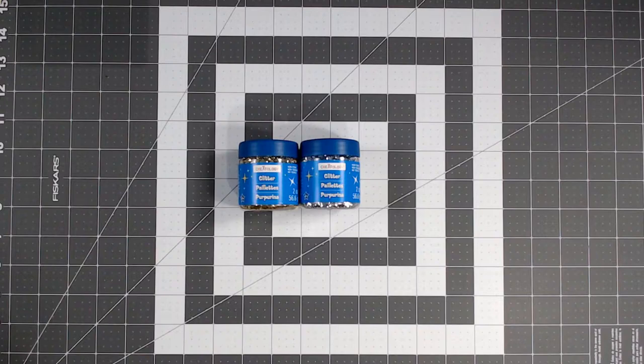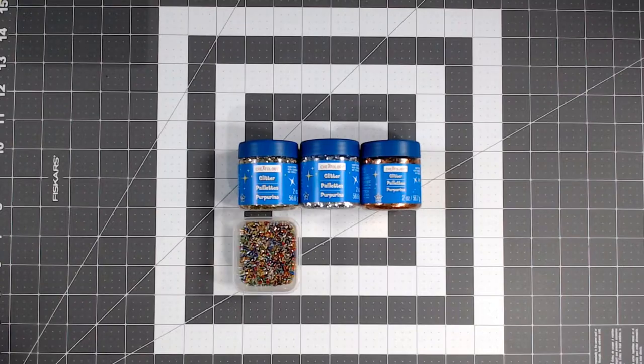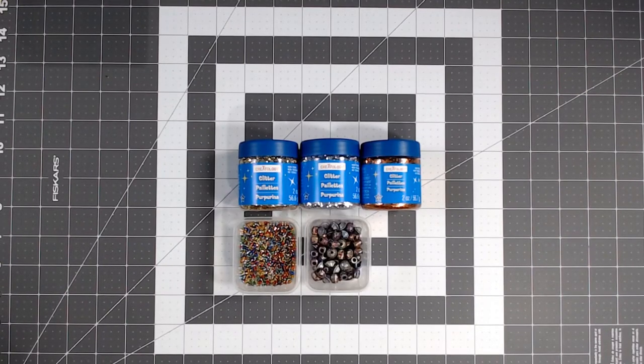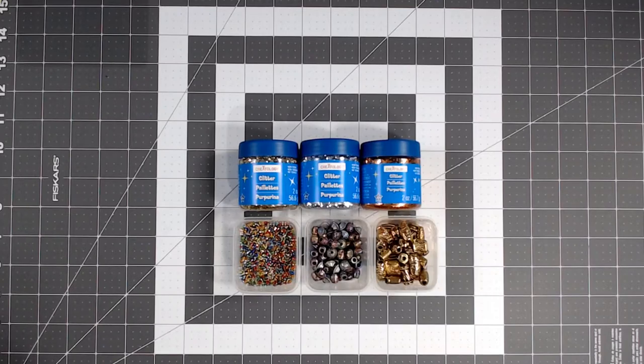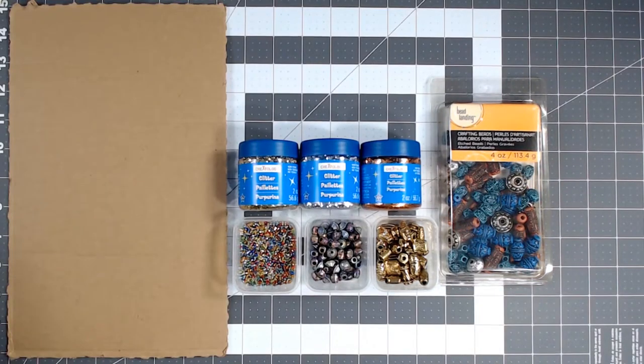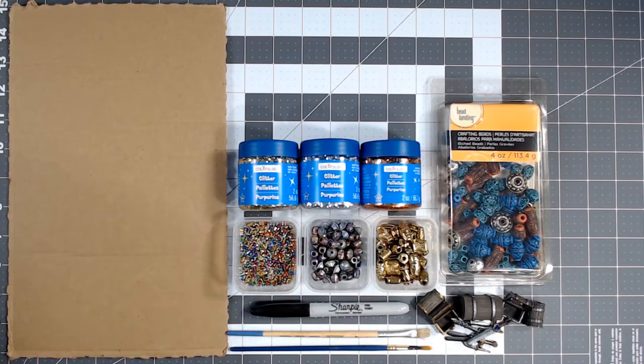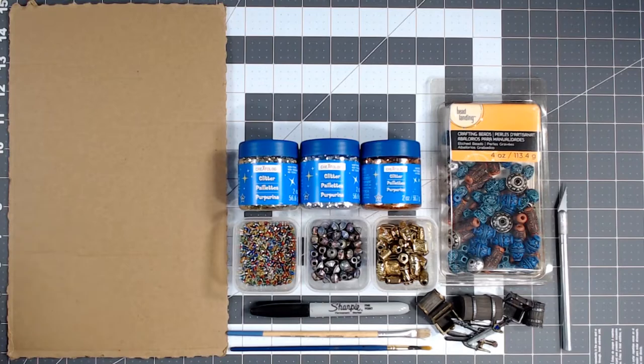I like to use one millimeter round gold, silver, and copper glitter. You're also going to want to find some multicolored seed beads, also about one millimeter, and a variety of metal, plastic, gold, and multicolored beads and spacers to use as additional decoration.